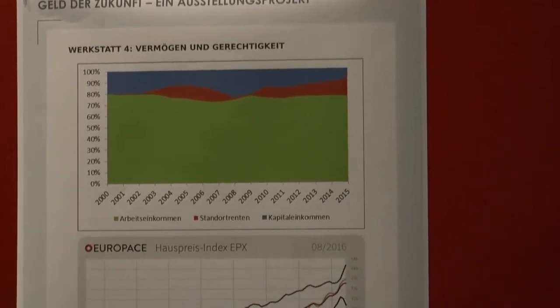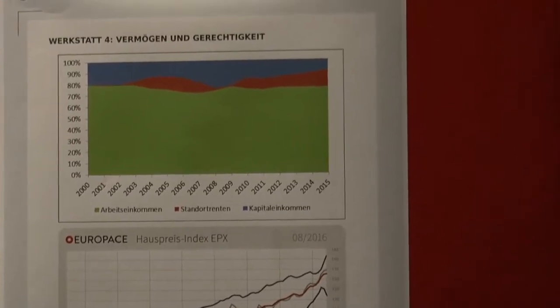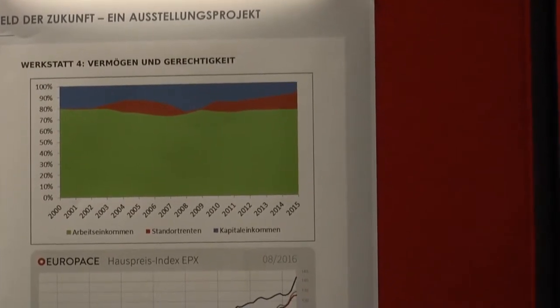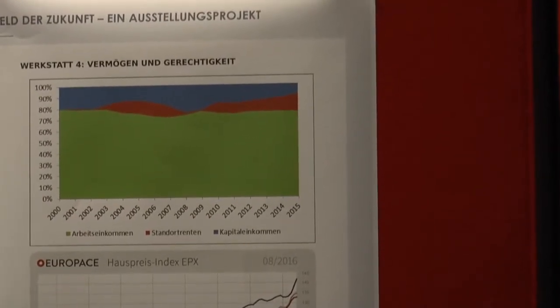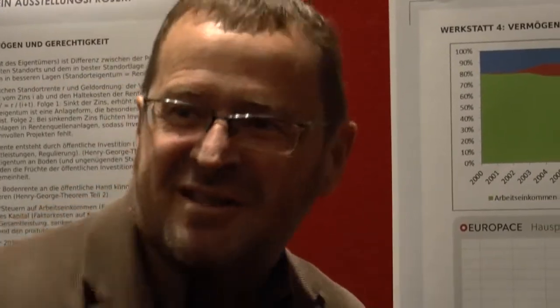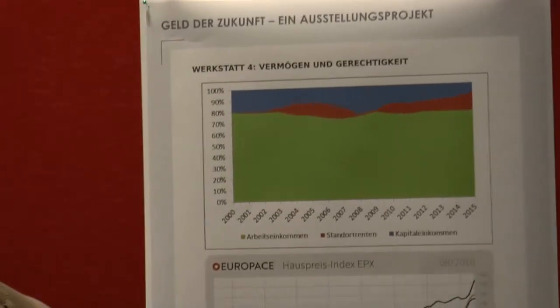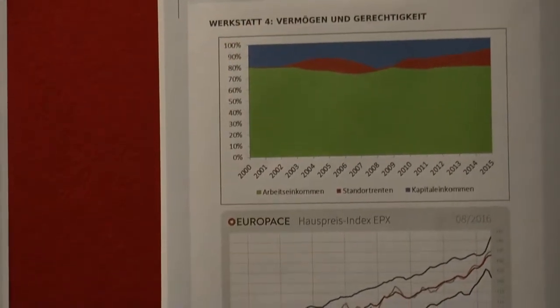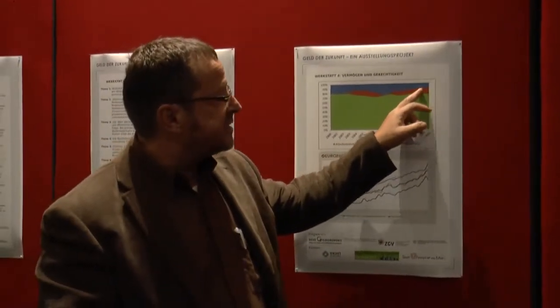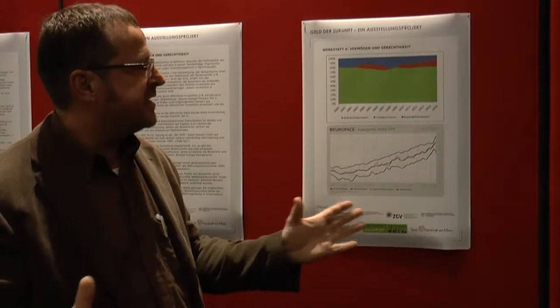Woran merkt man es? Man merkt es daran, dass die Mieten sehr stark in die Höhe gegangen sind. Das liegt nicht daran, dass die Bausubstanz so teuer geworden ist – was eigentlich gestiegen ist, das sind letztlich die Erträge für den Boden. Was das Wohnen und den Kauf einer Immobilie so teuer macht, ist, dass der Wert einer Immobilie diese Bodenrente ist, die immer weiter gestiegen ist – und dann diskontiert man sie mit einem Zinssatz, der immer weiter sinkt. Die Preise sind in Ballungsräumen stark nach oben gegangen, und die Mieten sind natürlich auch gestiegen.